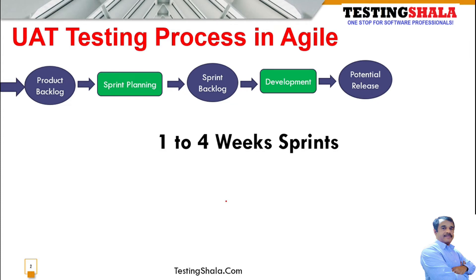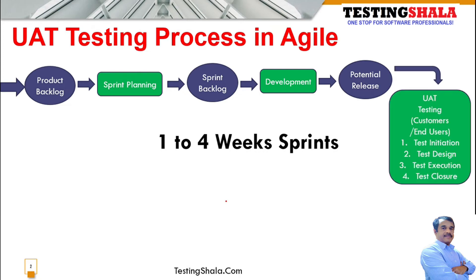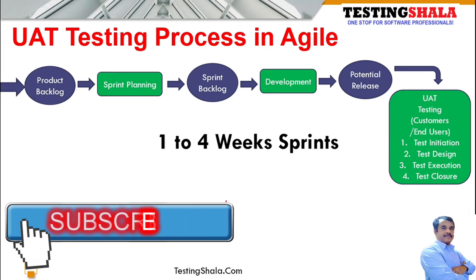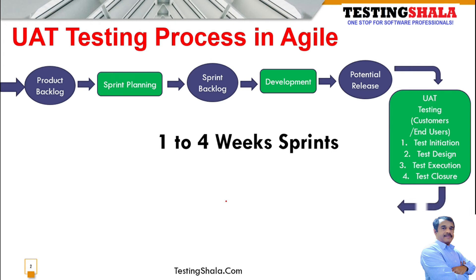When the development team and testing team feel that there is scope for a potential release of a given user story, that is the time there will be a user acceptance testing (UAT) happening for features planning to ship for potential release. As part of UAT, there are various activities performed: test initialization, test design, test execution, and test closure.